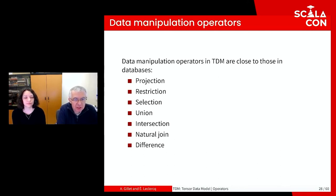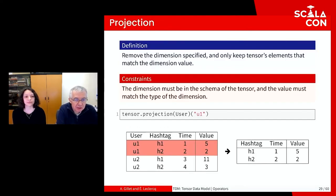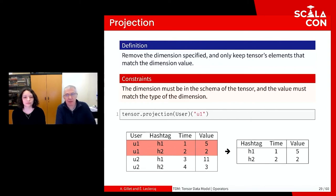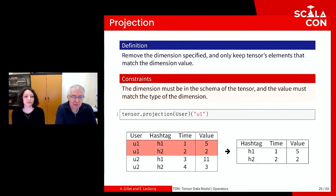The data manipulation operators are close to those of databases, like Join or Union. The projection operator focuses on one element of a given dimension and removes that dimension from the tensor, thereby reducing the order of the tensor by one. To use it, we must provide a dimension present in the tensor schema and a value of the correct type — otherwise it will not compile.